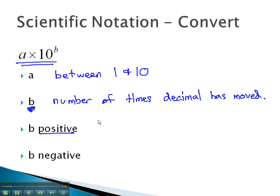If b is positive, it means the original number in standard notation is big. For example, if the original number was 5 million, that would be a big number with a positive exponent in scientific notation.